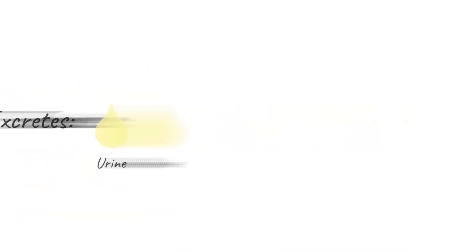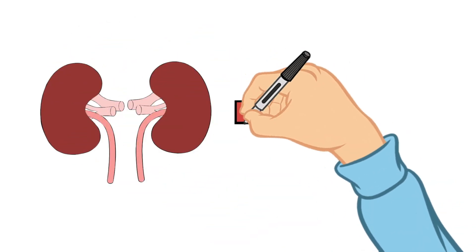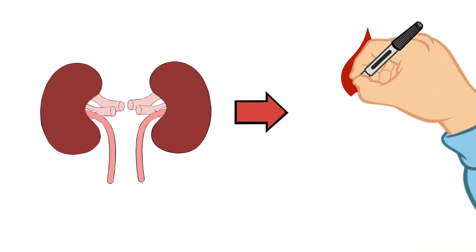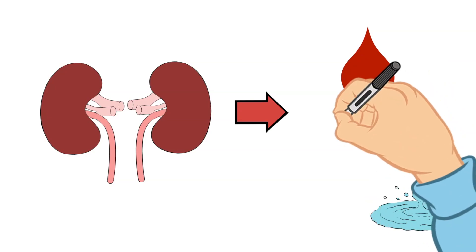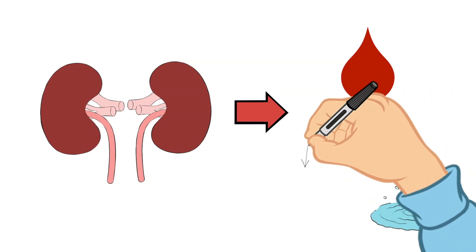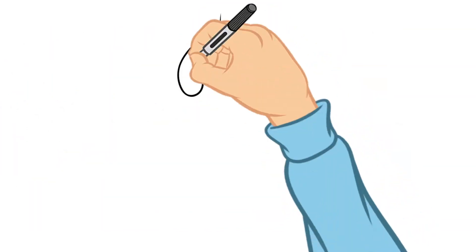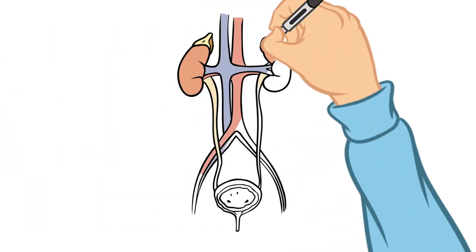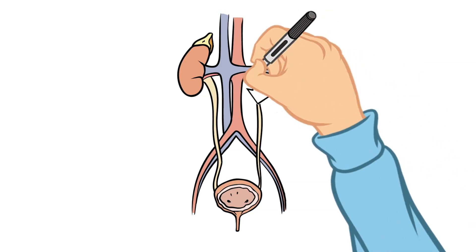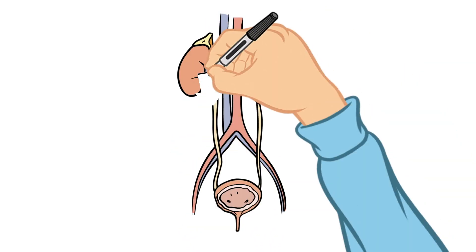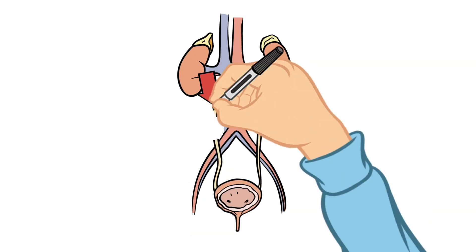The primary function of the kidneys is the elimination of excess water and wastes from the bloodstream. This is done using structures called nephrons. The product that is created in this process is called urine. The urine then flows out of the kidney through the ureter into your bladder.